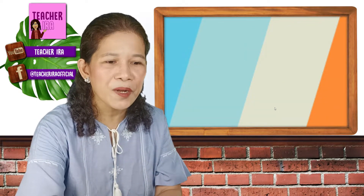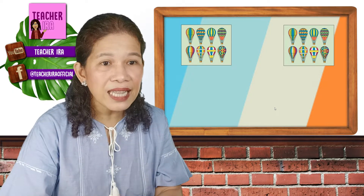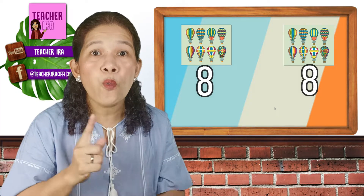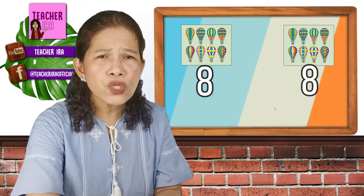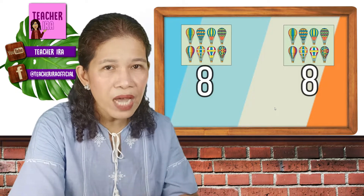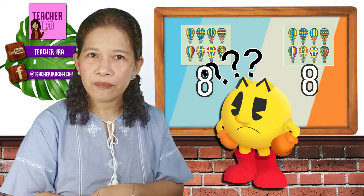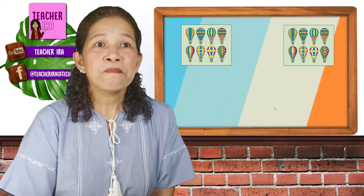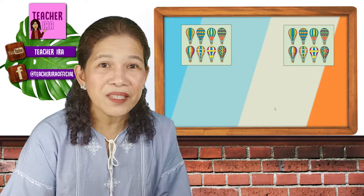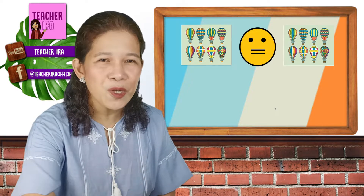Now, let's have some more examples here. We have two sets of hot air balloons. The first set has 8, and the second set has 8 too. Now, we have the same number of elements here. When it comes to that point, Pac-Man will think — should I eat the one on this side, or on this side? And then suddenly his mouth would go hmm, because he could not decide what to eat. Look at the mouth of Pac-Man — it's going to be equal, because he could not decide which set to eat.